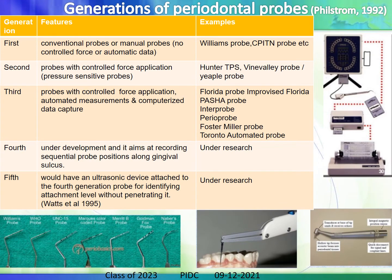The five generations of probes: First generation — conventional manual probes with no force control, e.g., Williams periodontal probe, CPITN probe, WHR probe. Second generation — pressure-sensitive probes with controlled force, e.g., Hunter TPS, Vine Valley, and Apple probes. Third generation — controlled force probes with automated measurements and computerized data capture, e.g., Florida probe, Interprobe, Perio-probe, Foster Miller's probe, and Toronto automated probe. Fourth generation is under development with sequential probe positions along the gingival sulcus. Fifth generation adds an ultrasonic device to identify attachment level without penetration.